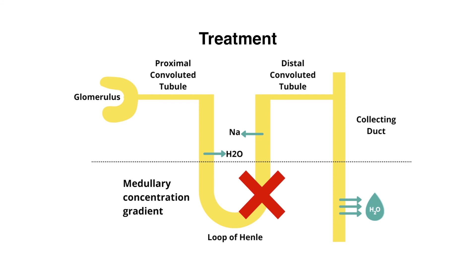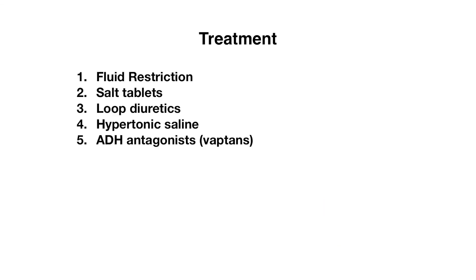A third thing we can do is to give diuretics. Interestingly, loop diuretics are actually the best option for patients with SIADH. As we said, ADH inserts aquaporin channels in the collecting duct, which allows water to move down its concentration gradient because of the medullary concentration gradient created by the loop of Henle. Loop diuretics work at the loop of Henle, so they short-circuit that medullary concentration gradient — meaning even though there's a high ADH level, less water gets reabsorbed. Loop diuretics work better than thiazide diuretics, which work more at the distal convoluted tubule and don't affect the medullary concentration gradient. So to recap: fluid restriction is the first-line treatment, you can add salt tablets if it doesn't work well, and loop diuretics are also another option.